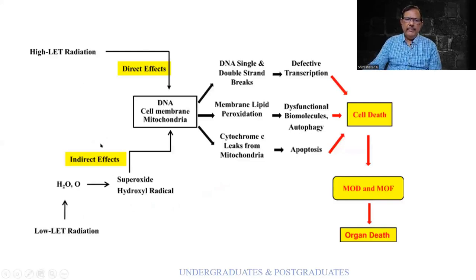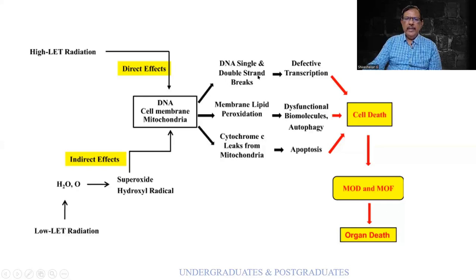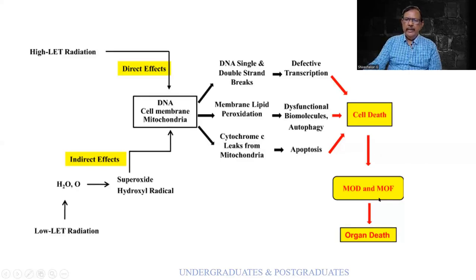There can be direct effects as well as indirect effects. With radiation, the cell membrane gets affected by direct effects. Superoxide and hydroxyl radicals can be produced, leading to cell damage. Ultimately, the target is the DNA — there can be single-strand breaks and lipid peroxidation. Organelle damage such as leakage from the mitochondria leads to transcription dysfunction as well as apoptosis, and ultimately organ death.